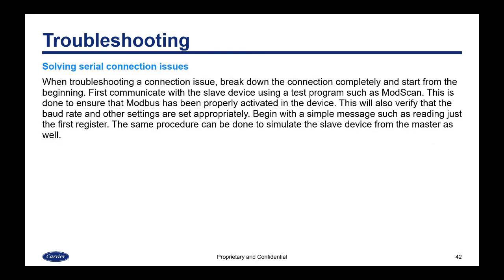When troubleshooting a connection issue, you want to break down the connection completely and start from the beginning. First, communicate with the slave device using a test program such as ModScan to ensure that Modbus has been properly activated in the device. This will also verify that the baud rate and other settings are set appropriately. Begin with a simple message such as reading just the first register. The same procedure can be done to simulate the slave device from the master as well.